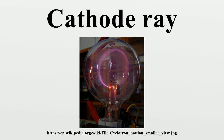Modern vacuum tubes use thermionic emission, in which the cathode is made of a thin wire filament which is heated by a separate electric current passing through it. The increased random heat motion of the filament knocks electrons out at the surface of the filament into the evacuated space of the tube. Since the electrons have a negative charge, they are repelled by the cathode and attracted to the anode, traveling in straight lines through the empty tube. The voltage applied between the electrodes accelerates these low-mass particles to high velocities.